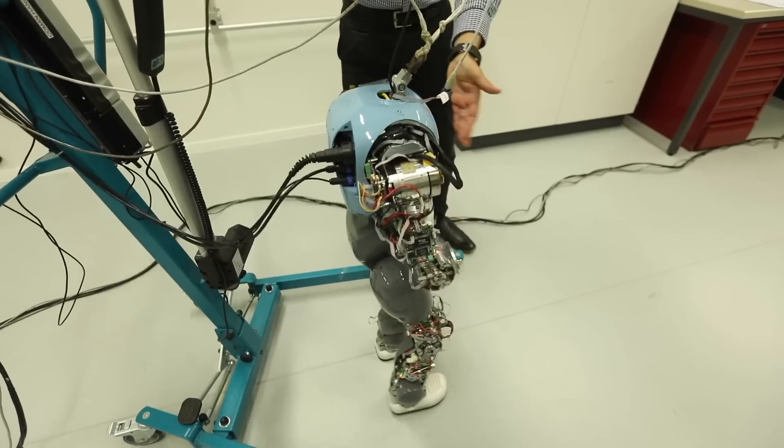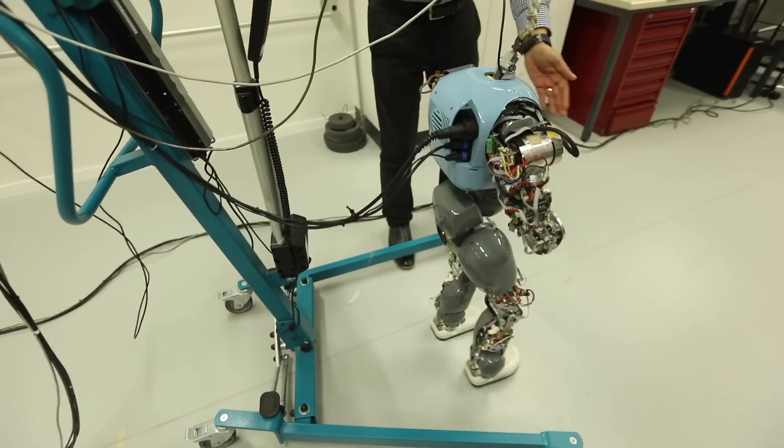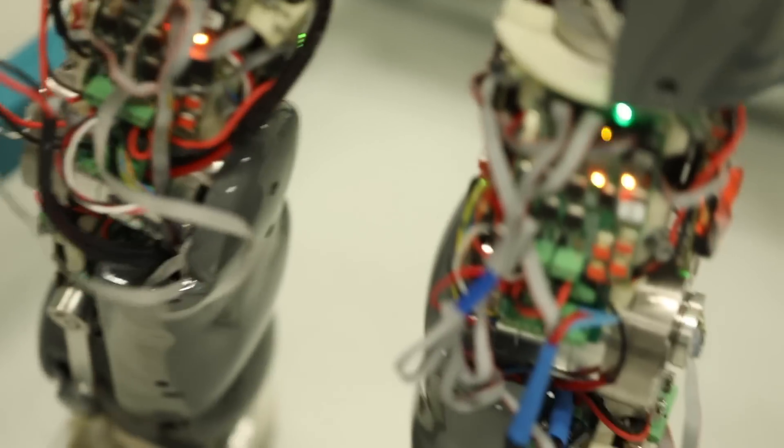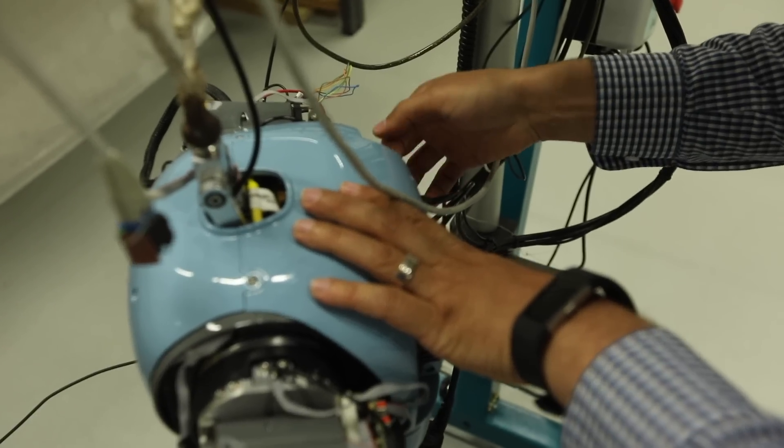There are many humanoids out there, but what is specific to Coman, whose name comes from compliant humanoid, is that its actuators are integrated with springs that can absorb shocks while walking, can save energy, and can provide the robot with the ability to walk more naturally.